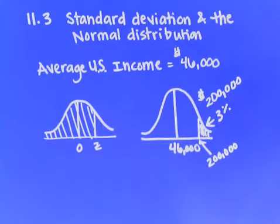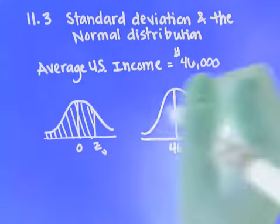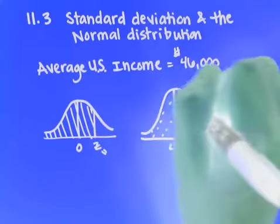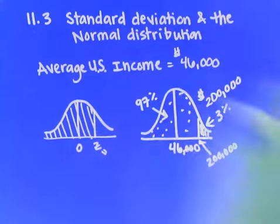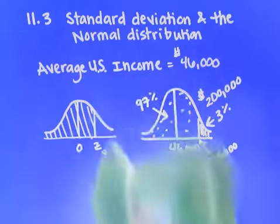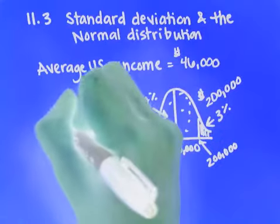We want to know what z-score that goes with. And so since this is 3%, we know on the left hand side, the area under the curve over here is 97%. So what we're going to look for is the z-score that goes with 97%.